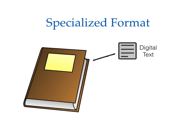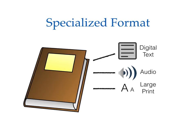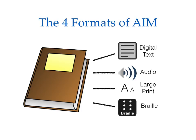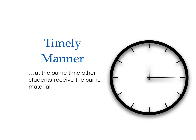For example, would the student be able to read the book if it were available in digital text, which can be spoken aloud through widely available, low-cost, and no-cost technology? Or perhaps the student could access the book if provided in a human-narrated audio recording, large print, or braille. These are the four specialized formats of AIM. Finally, timely manner means the student who needs AIM receives material in the required format at the same time that other students receive the standard version.